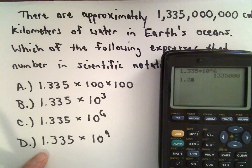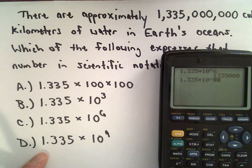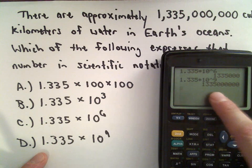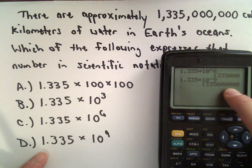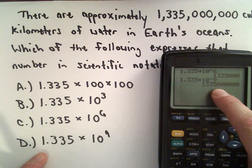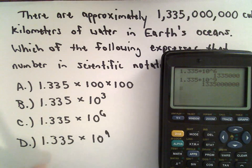So 1.335 multiplied by 10 raised to the ninth. That's giving me 1, 2, 3, 4, 5, 6 zeros, and then 1,335. So answer choice D is the correct choice.